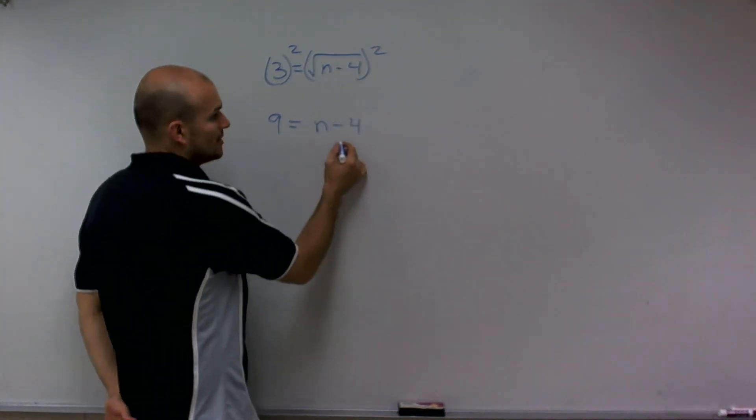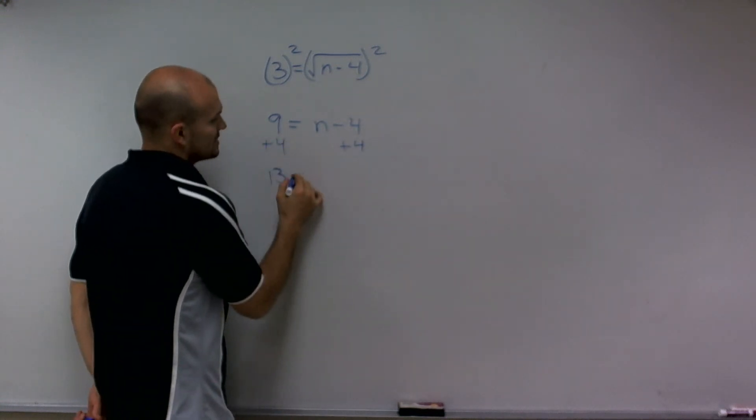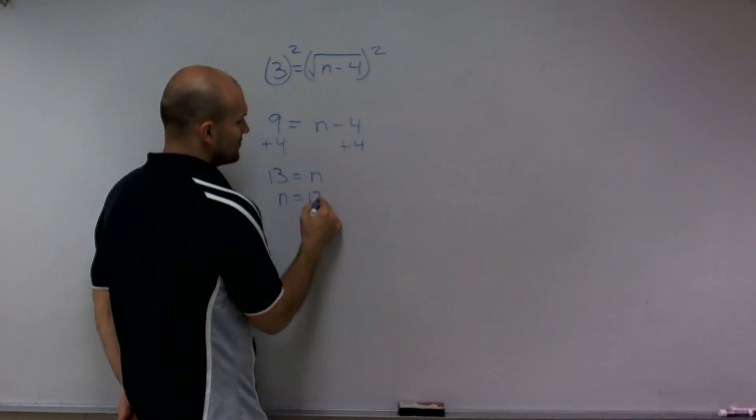Now, to isolate my variable, I'm just going to simply add 4 to the other side to produce 13 equals n, or n equals 13.